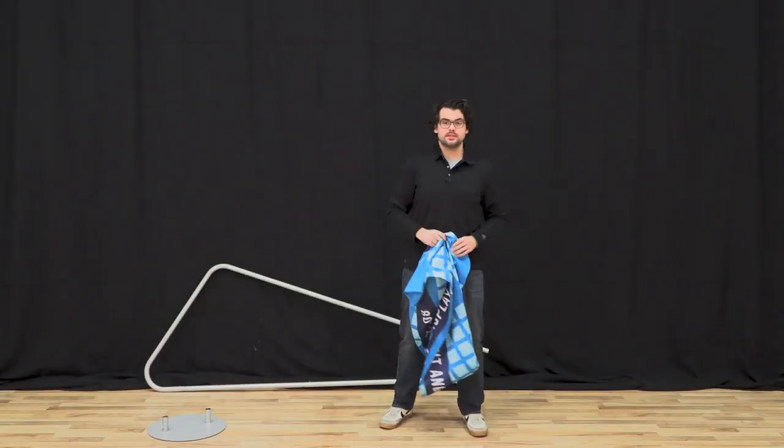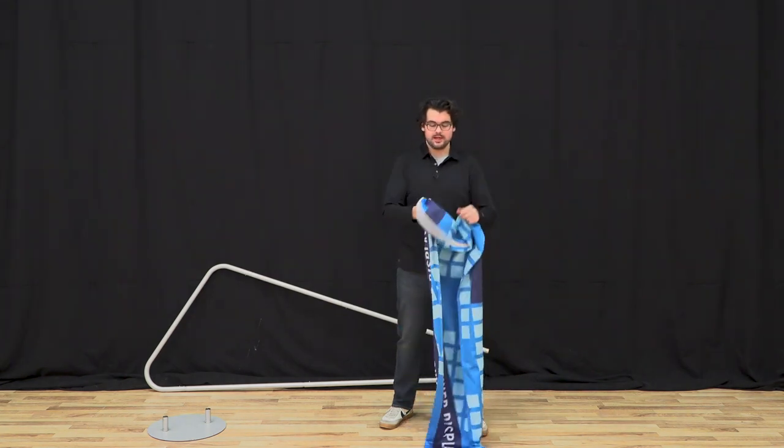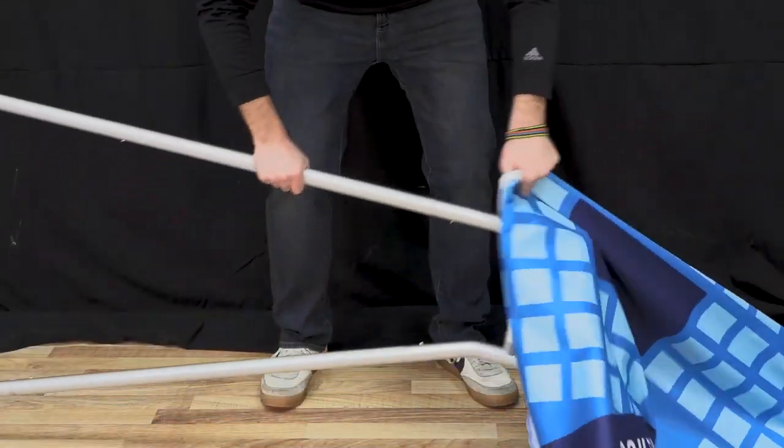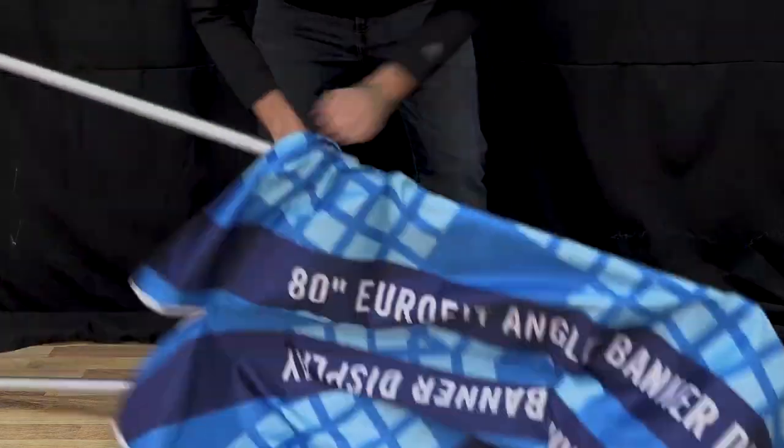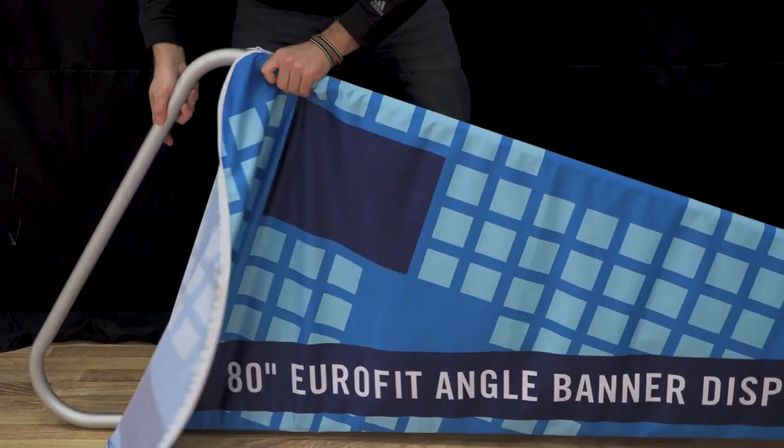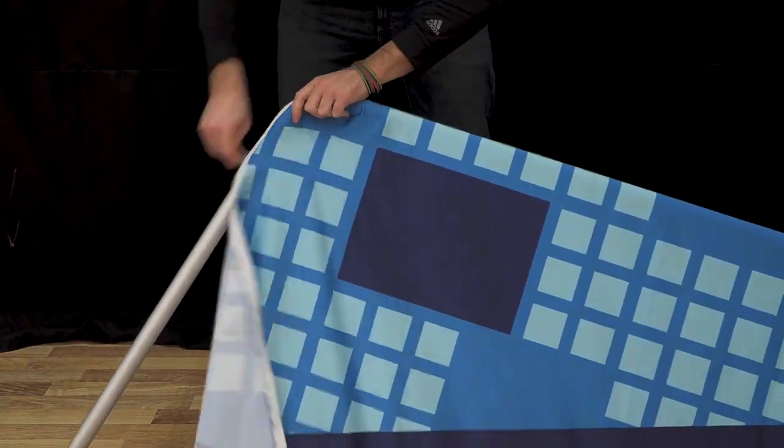With your frame assembled, it's now time to apply your graphic. Go ahead and identify the zipper at the top, unzip and insert your frame, and pull on the graphic kind of like a pillowcase. Pull it forward so it's nice and taut and go ahead and zip the top.